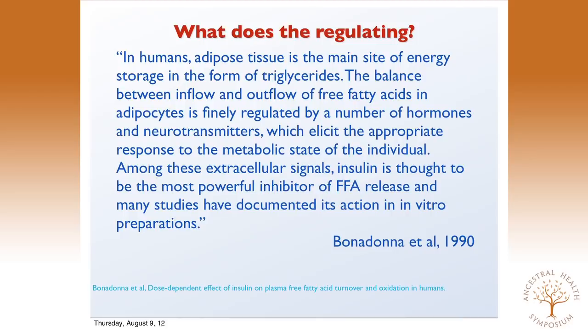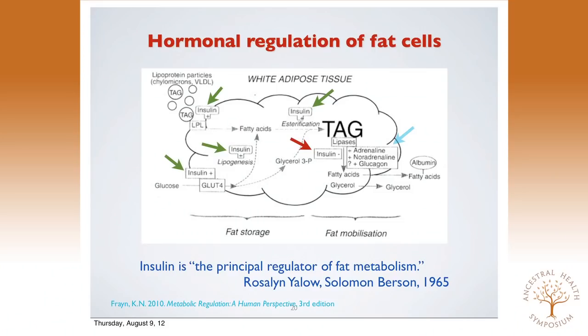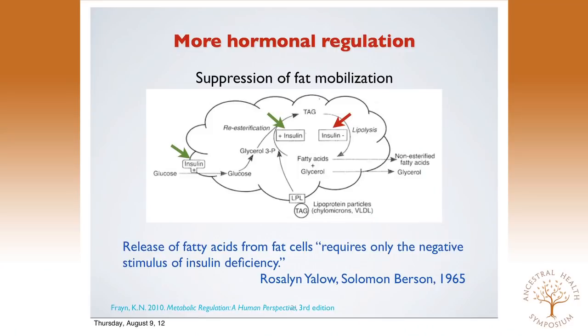The answer in fat cells, as a 1990 paper put it: in humans, adipose tissue is the main site of energy storage. The balance between inflow and outflow of free fatty acids in adipocytes is finely regulated by hormones and neurotransmitters, which elicit the appropriate response to the metabolic state of the individual. Among these extracellular signals, insulin is thought to be the most powerful inhibitor of free fatty acid release. In response to the nutrient content of the diet, pretty much we're talking about insulin. It's been known since the early 1960s.